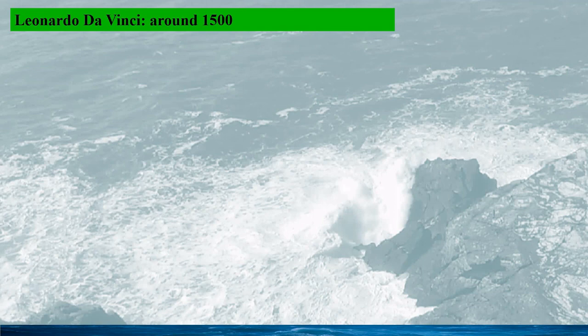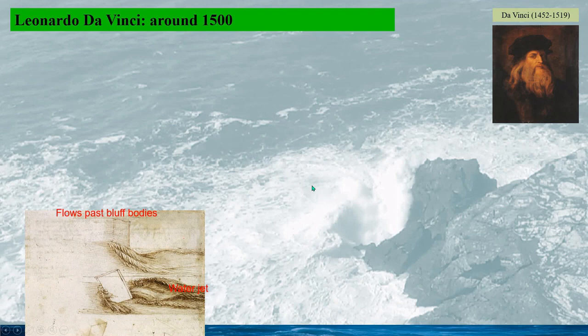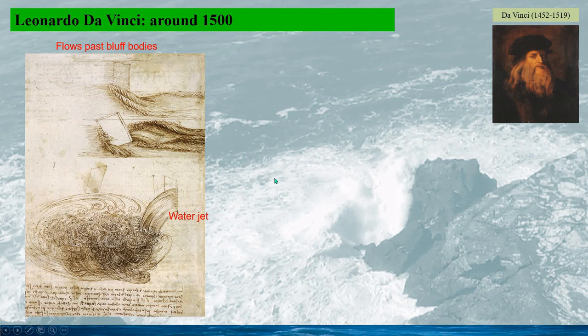The recorded study on fluid turbulence would first be made by Leonardo da Vinci, the Italian polymath, who made so many significant contributions in many areas, even including fluid mechanics. Around 1500, Leonardo da Vinci observed fluid turbulence and drew a few drawings of turbulent flows. Here are shown some of them. This is the flow past a bluff body, in which we can see the vortex shedding clearly from the structure.